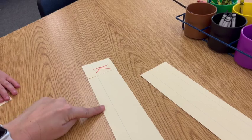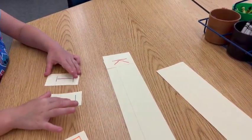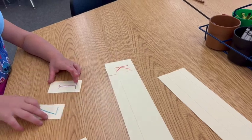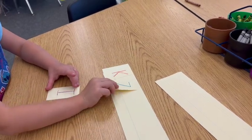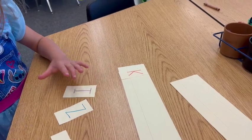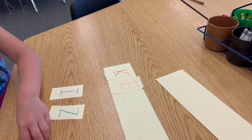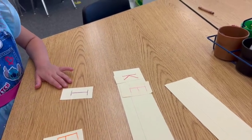In the next level of this activity, which I probably would not do again with her because it was a little bit challenging, you take away the scaffold of having the name underneath the puzzle, you flip over that strip so that they cannot see their name, and then they have to put the pieces back in the correct order without looking at their name.